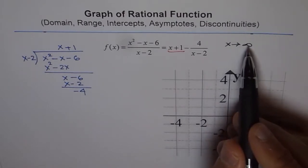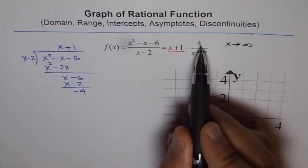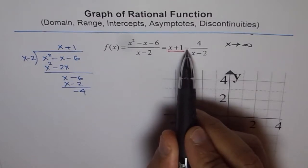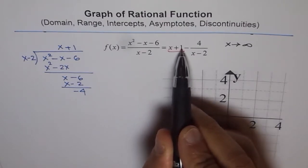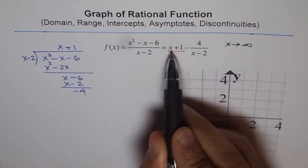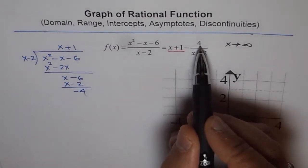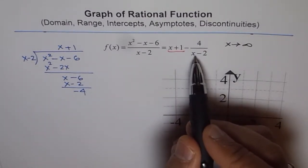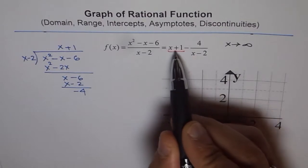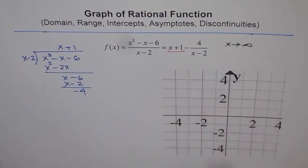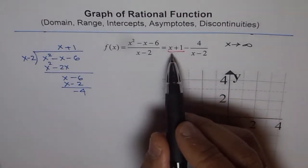If x is a very large positive number, then the denominator will be positive, and the numerator is always positive 4. Since it is minus, our function f(x) is slightly less than x plus 1 — it is approaching the line x plus 1 from the underside, from the lower side. Since x is very large, 4 over a large number is very small, but the whole value will be less than x plus 1. That gives us the behavior near the oblique asymptote x plus 1.